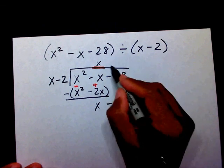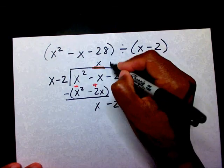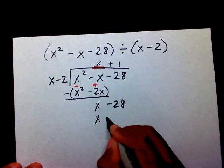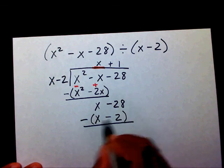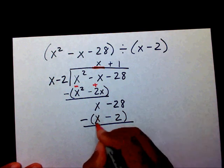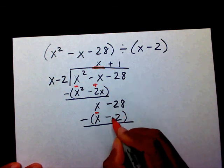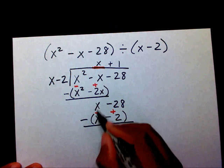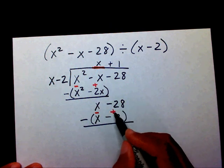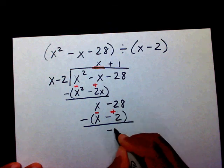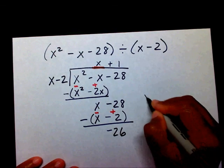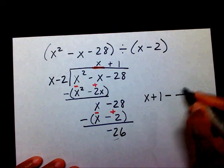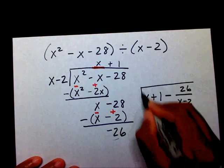Now I need to know what number times x will give me x. Well, 1. 1 times x is x, and 1 times negative 2 is negative 2. Now I'm going to subtract. This positive x will become a negative x, and this negative 2 will become a positive 2. The x's cancel each other out, and negative 28 plus 2 is negative 26. So my final answer is x plus 1. This is a negative 26, so I have to write minus 26 over x minus 2. And this is my final answer.